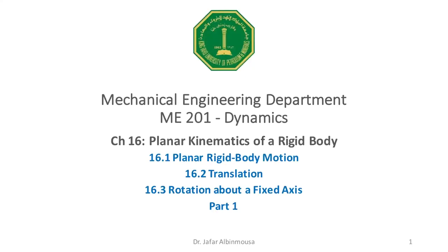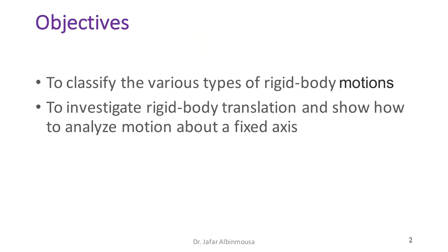Welcome to this new session which is going to start Chapter 16: planar kinematics of rigid body. We will discuss three sections: planar rigid body motion, translation, and rotation about fixed axis in two parts. The objectives here are to classify the various types of rigid body motions, to investigate rigid body translation, and to show how to analyze motion about a fixed axis.